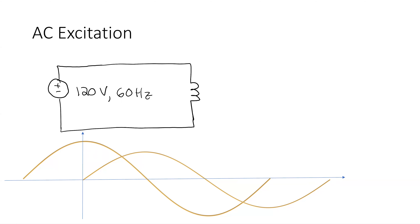Why is it 60 Hz? Historically, it was decided it was going to be 60 Hz a hundred and some odd years ago, and that's what it is. In most of the rest of the world it's 50 Hz. I know why we chose 60 over DC, but I'm not sure why we chose 60 over 50. If it were up to people nowadays, we'd probably do things differently — the world's a different place than it was in 1900.